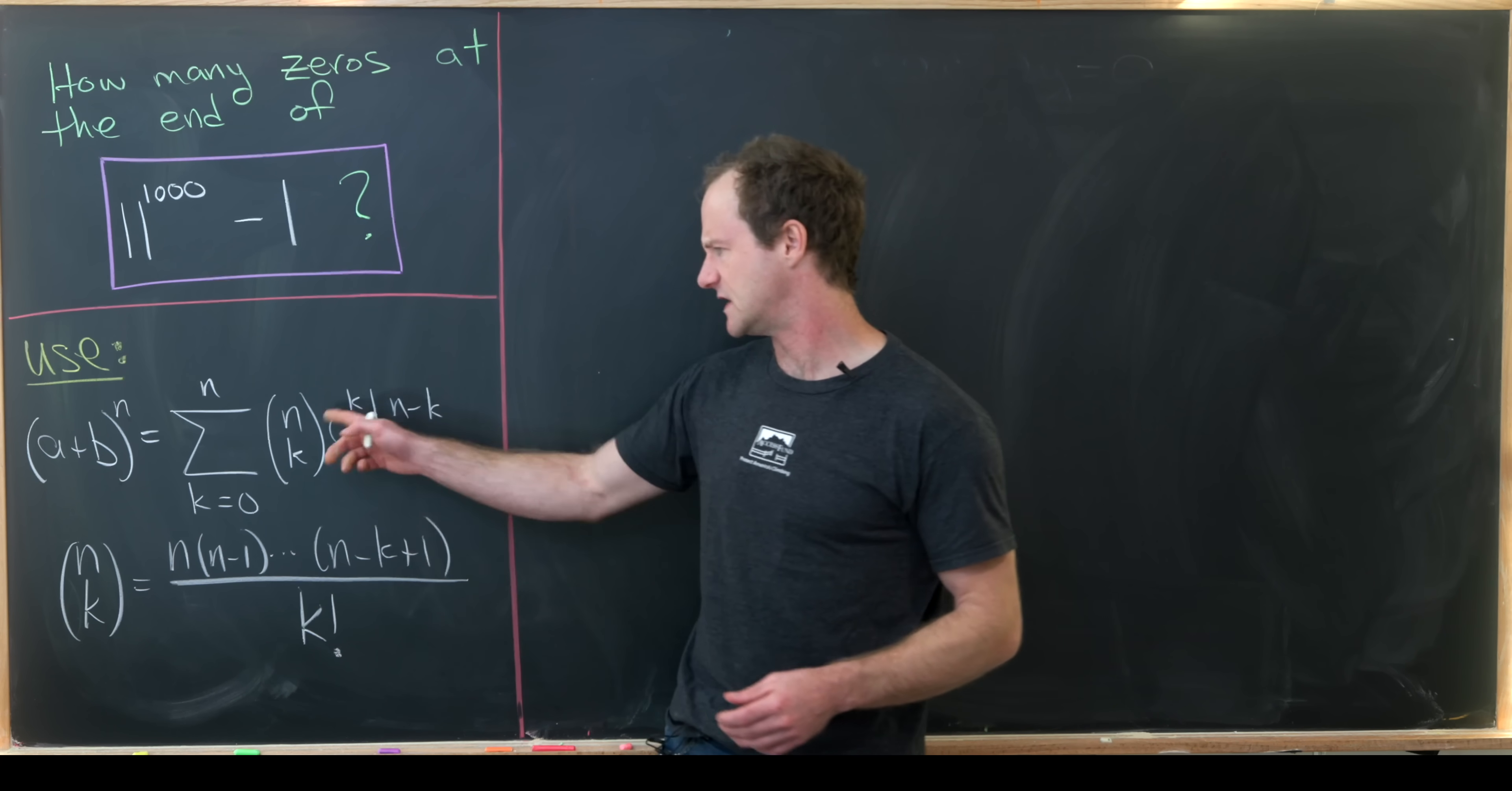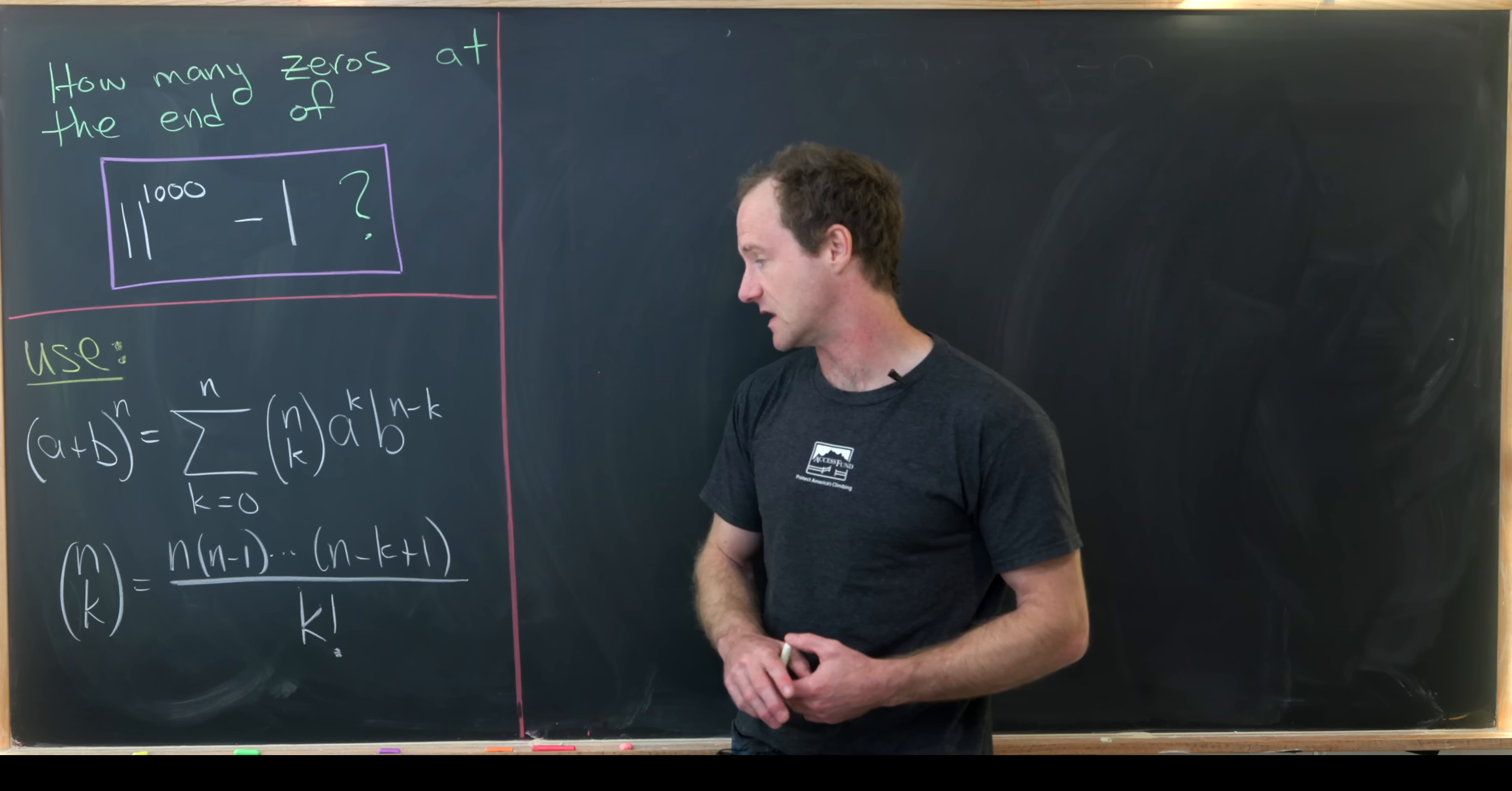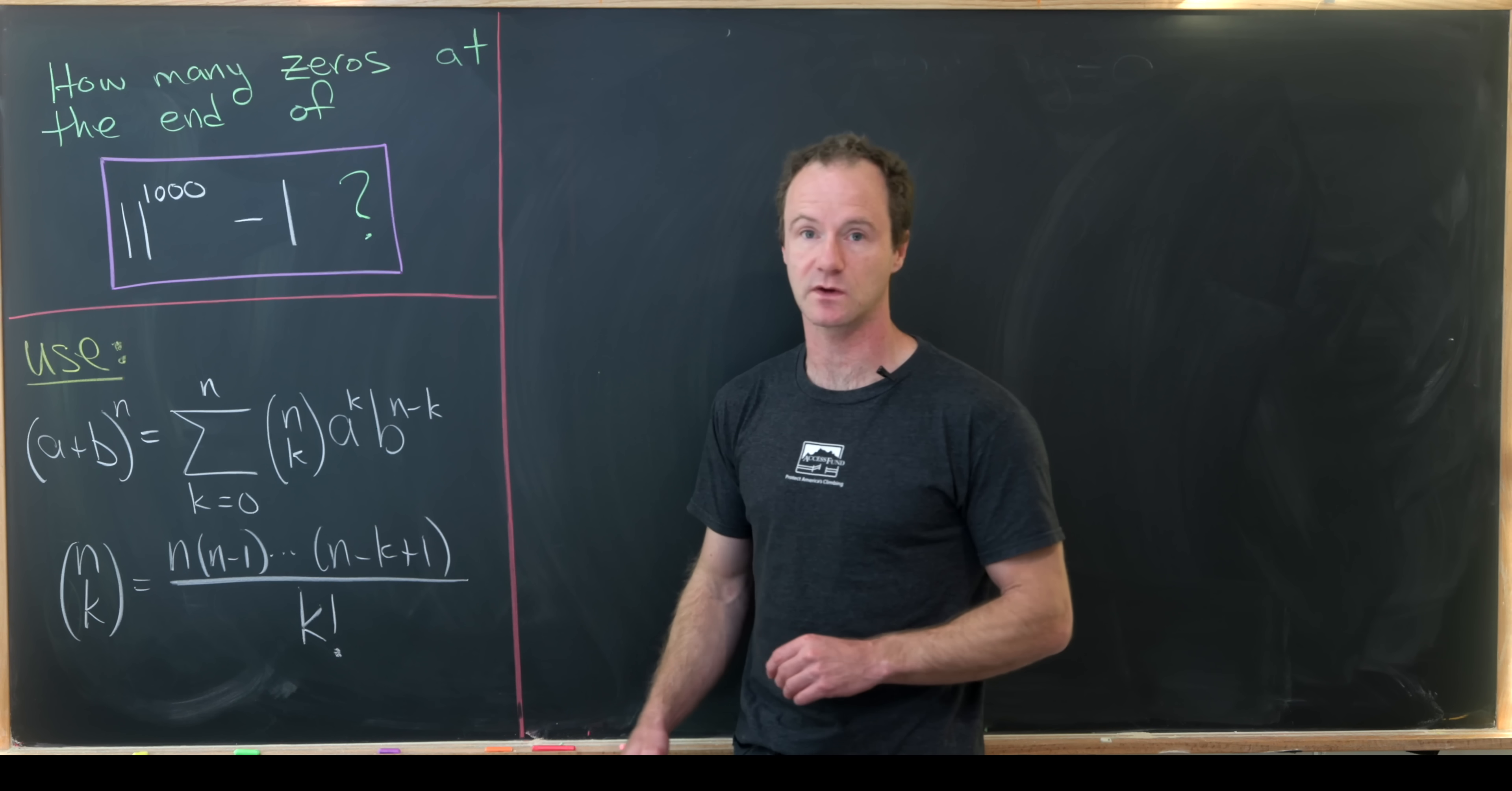And so what's n choose k you might say? Well that's the binomial coefficient and it's defined as n times n minus 1 times n minus 2 all the way down to n minus k plus 1 over k factorial.